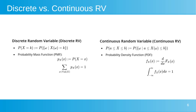This is a contrast between discrete and continuous random variables. Discrete random variables have countable values with a probability mass function (PMF) summing to 1 across all possible values. Continuous random variables, on the other hand, have uncountable values described by the probability density function (PDF), where the integral over the entire range equals 1, and the probability of any single point is 0.